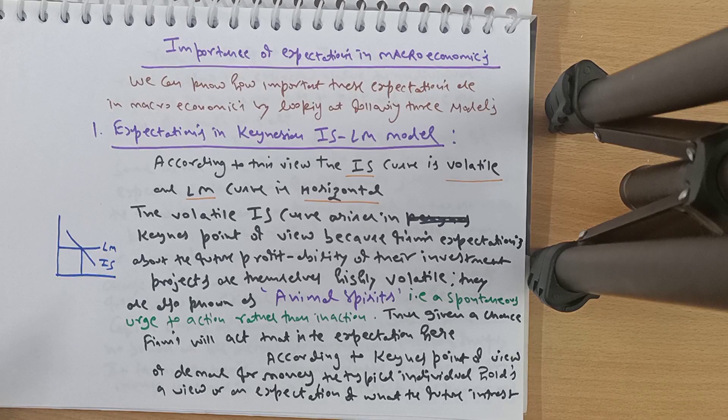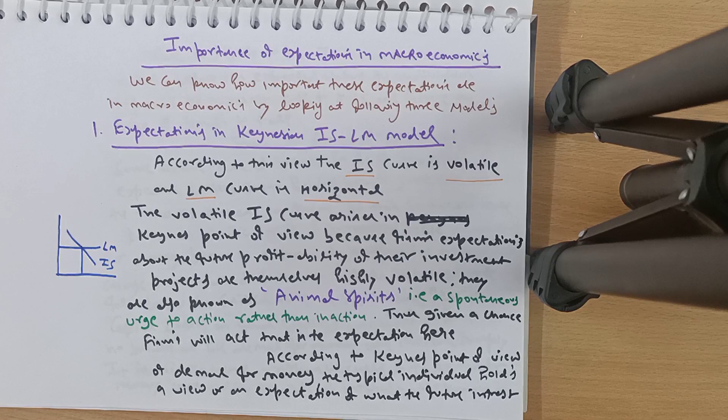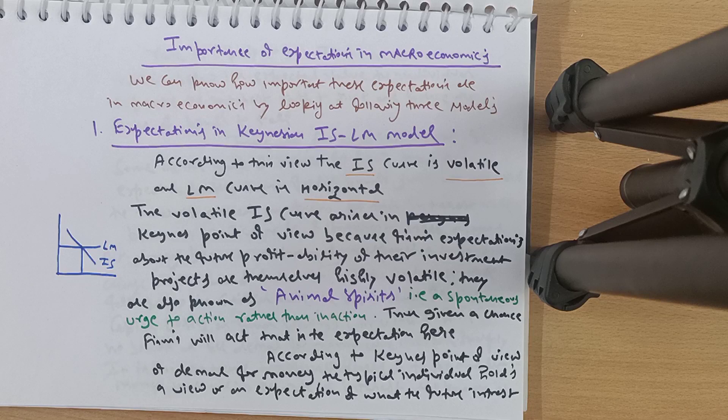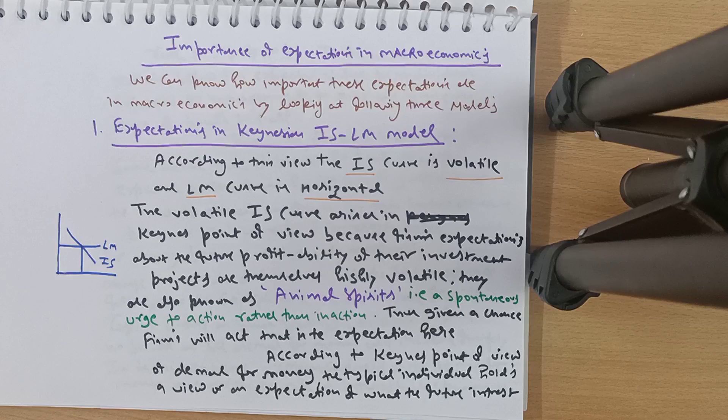According to the Keynesian view, the IS curve is volatile and the LM curve is horizontal. The volatile IS curve arises in Keynes' view because firms' expectations about the future profitability of their investment projects are themselves highly volatile. These are also known as 'animal spirits' — a spontaneous urge to action rather than inaction.